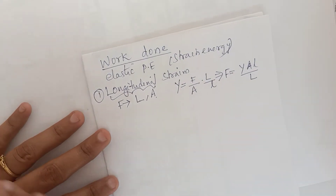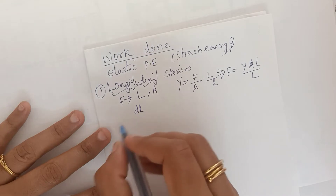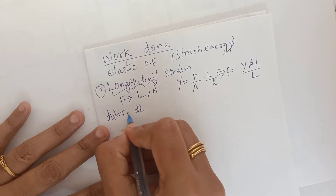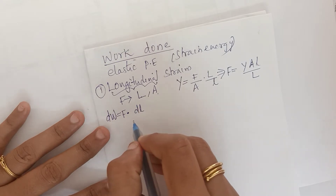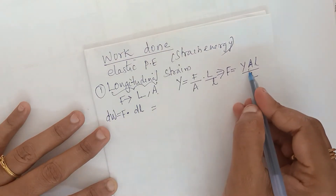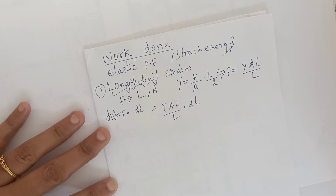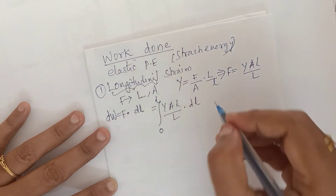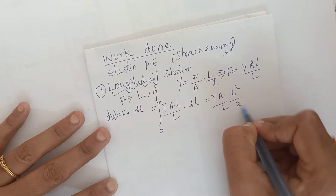We are going to increase the length and do some work; the length changes by dL. The incremental work done is dW = F·dL = (Y·A·L/L)·dL. To find the total work done as length increases, we integrate from 0 to ΔL, giving us Y·A·ΔL² / (2L).